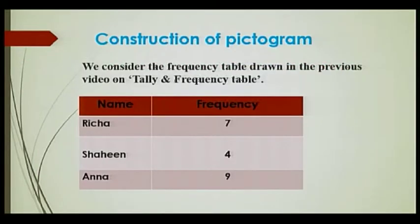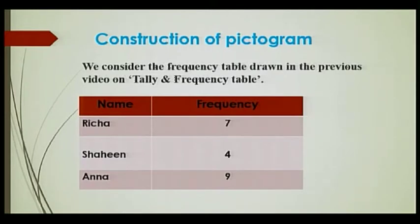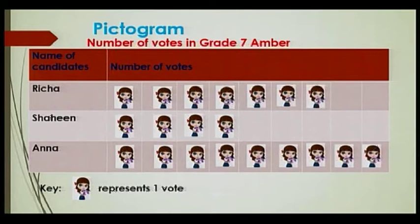We now move on to the construction of a pictogram. We consider the frequency table which was drawn in the previous lesson. Remember, Richard had obtained seven votes, Shaheen four votes, and Anna nine votes. We are going to use this frequency table to construct our pictogram, and remember you need to put a title. The title here is 'Number of votes in Grade 7'.